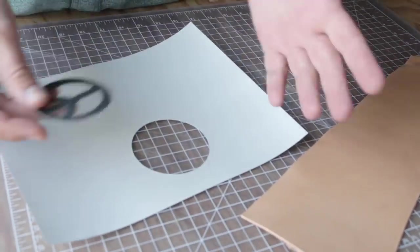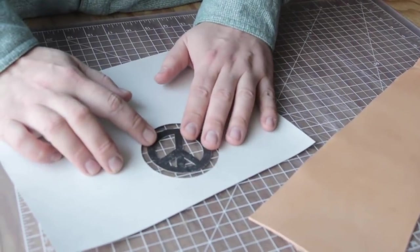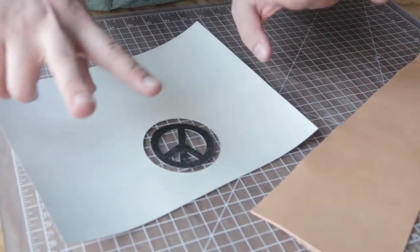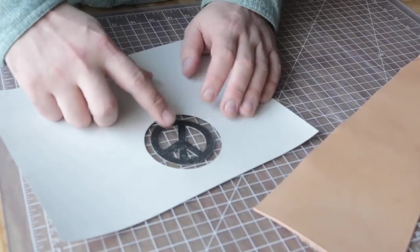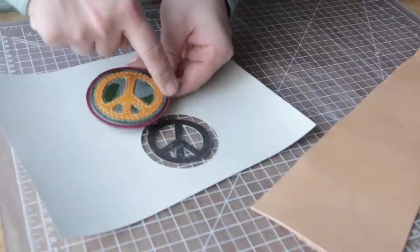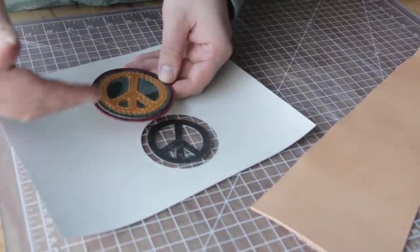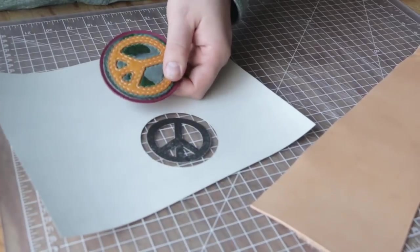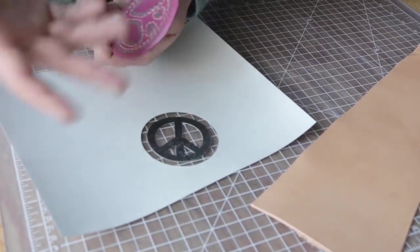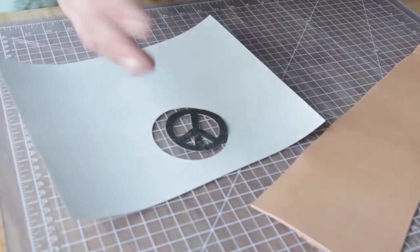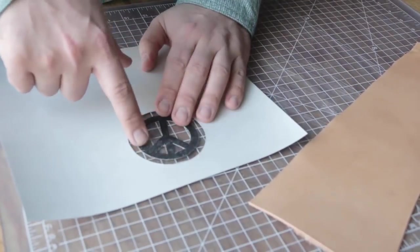So all I did to make this pattern is I went online and found a peace sign picture, printed it out, and made this little template thing. You want to make sure when you're making a leather patch that you leave room for the stitching on the outside for where you're going to stitch it to whatever you're putting it on.